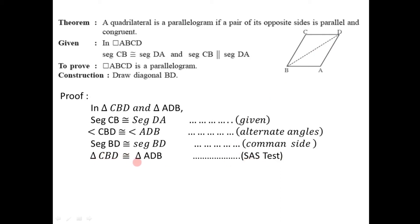So triangle CBD is congruent to triangle ADB. We know that if two triangles are congruent then the corresponding sides and corresponding angles are also congruent. So here we consider angle CDB, which is congruent to angle ABD — these are the corresponding angles of these two congruent triangles.